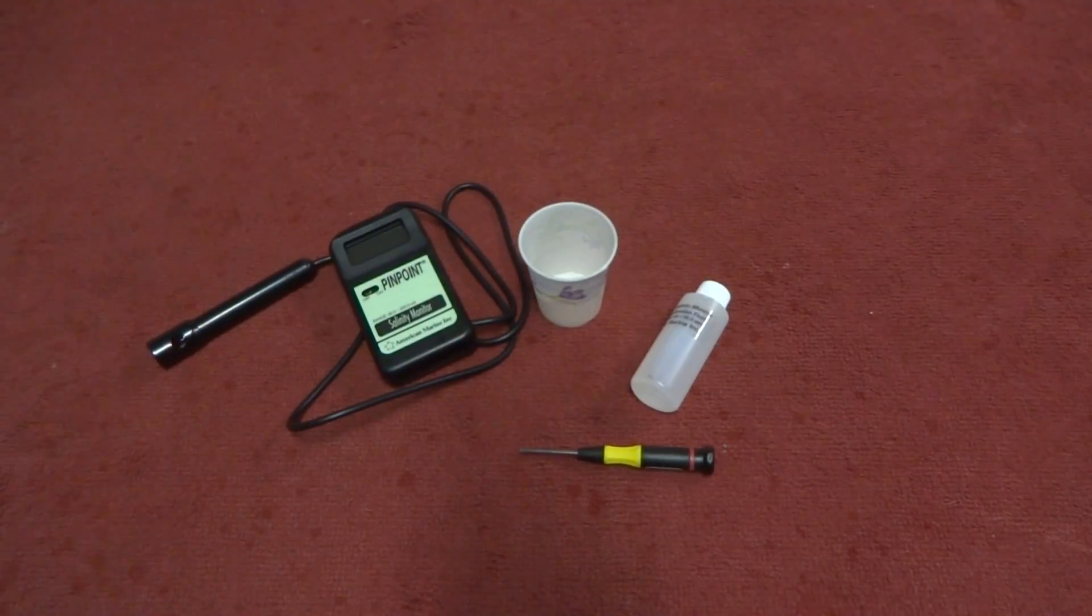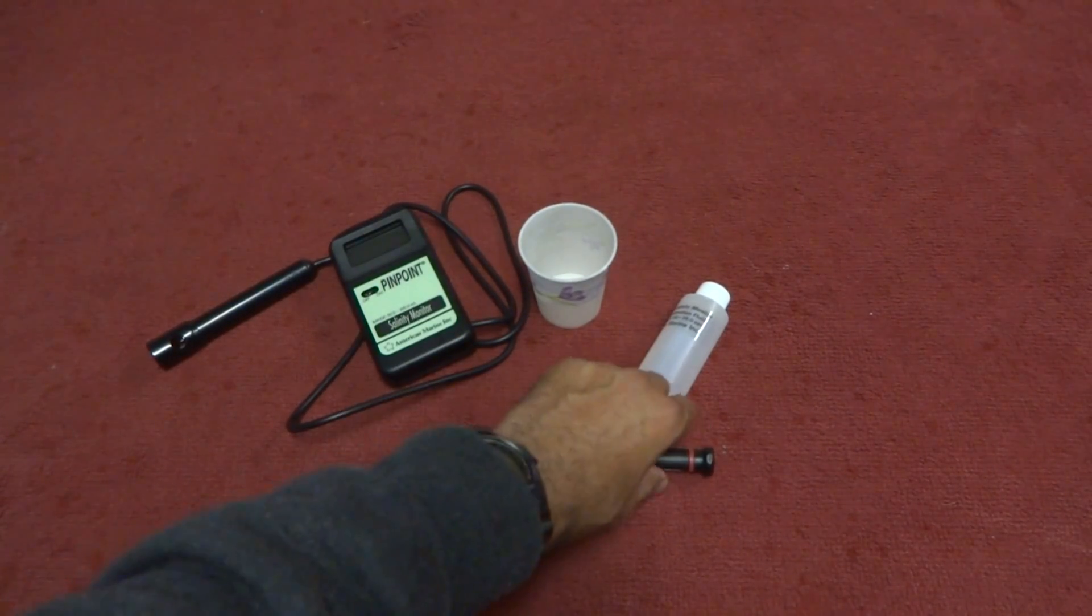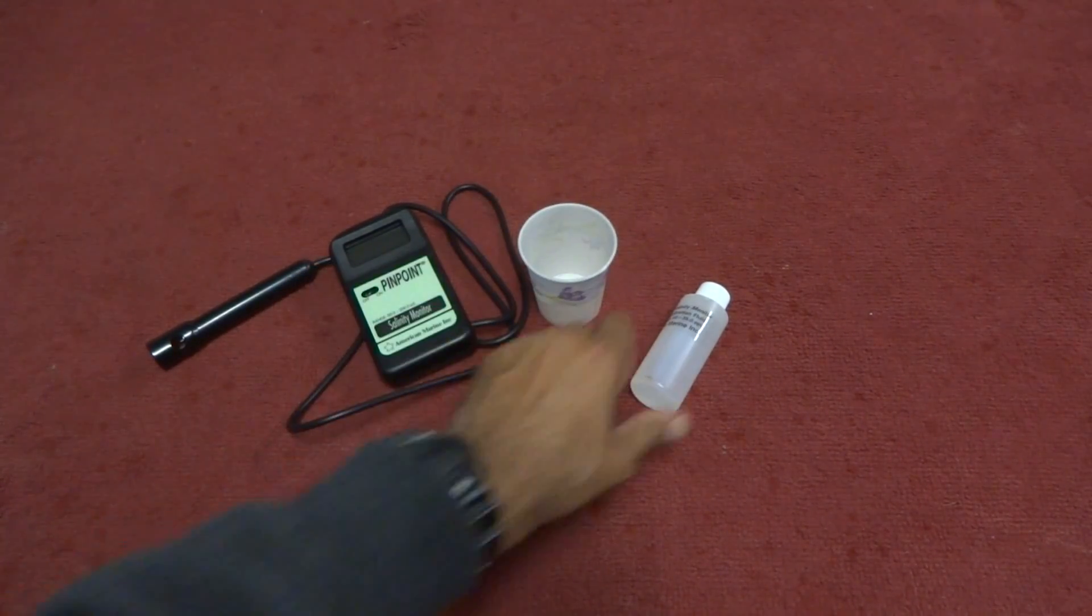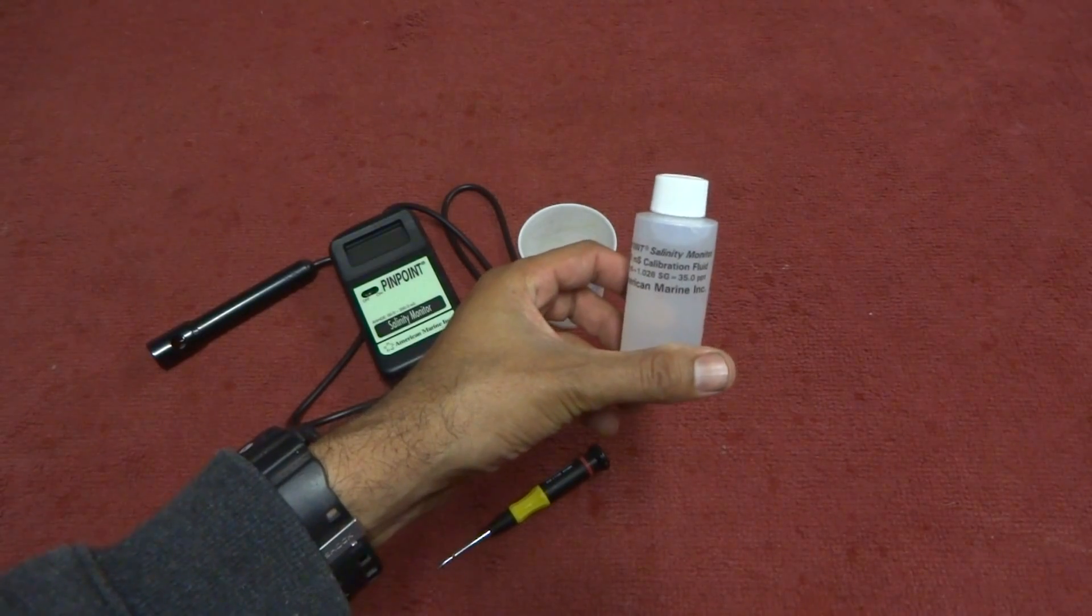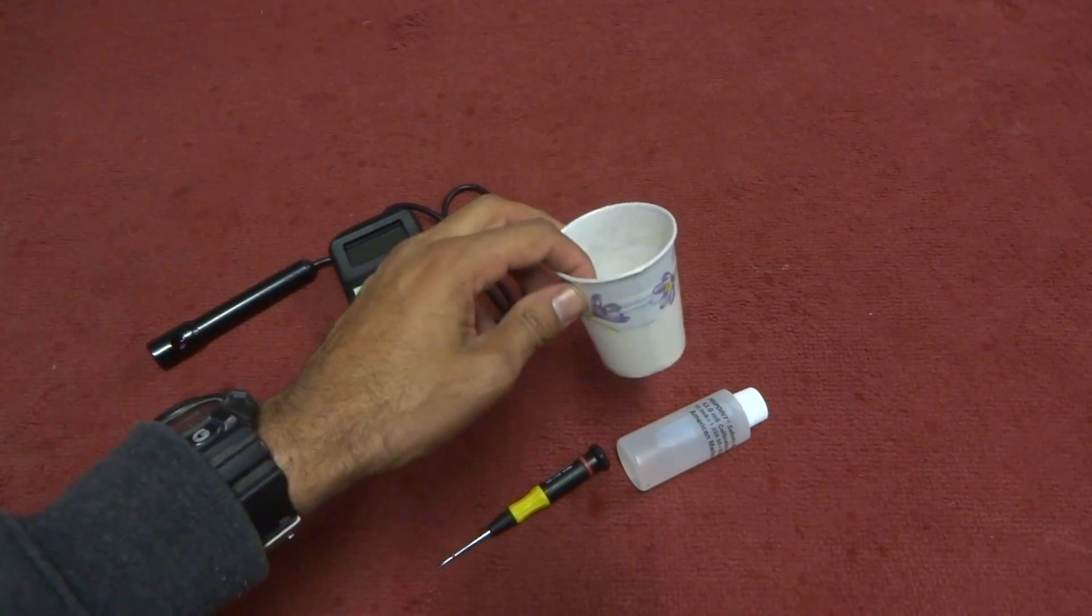These are the items you'll need to calibrate the salinity monitor. A mini flathead screwdriver, the calibration fluid, and a clean container.